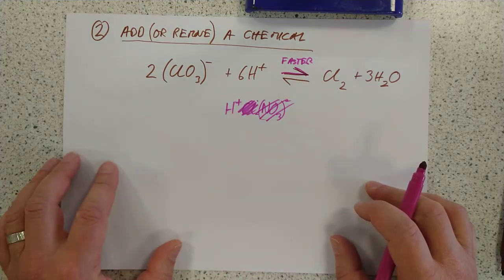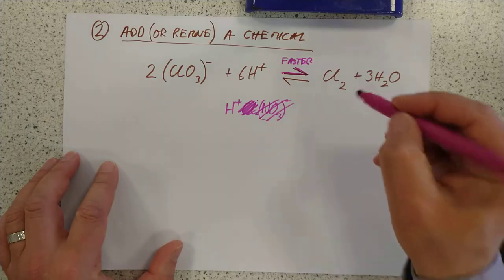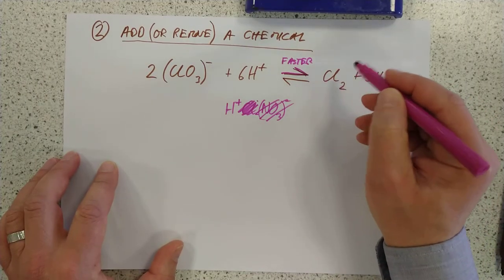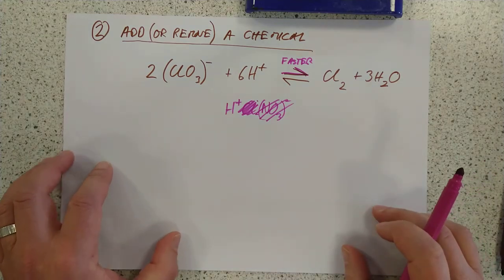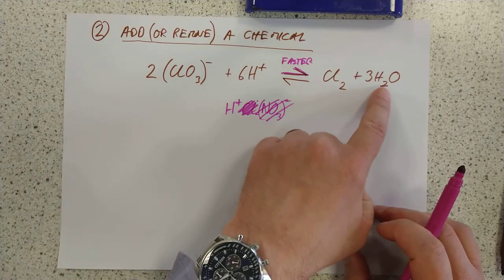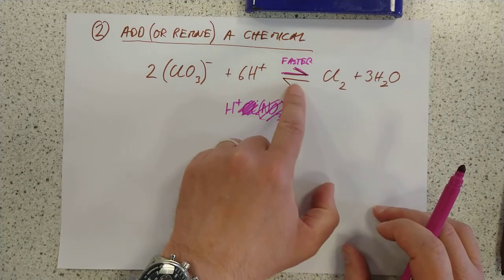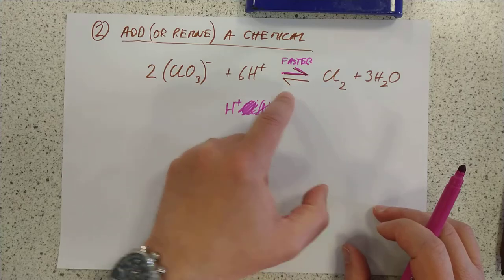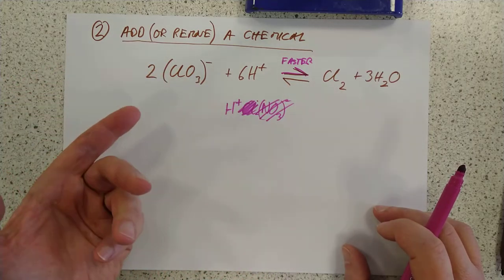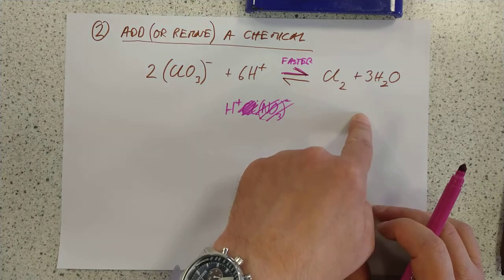The opposite would also apply, of course. If we were to somehow remove some of the chlorines, for example, if you just take that as an example, remove some of the chlorines, then they are able to collide with the water less often, and this reaction here would become slower, and this one would just continue at its previous rate, you would still end up moving over towards this side.